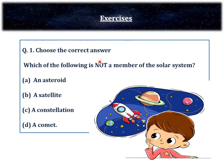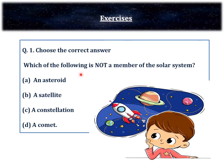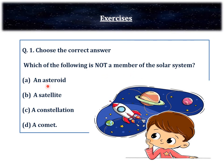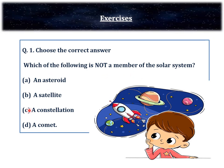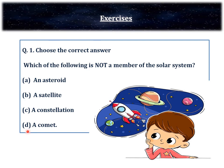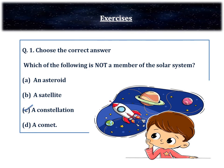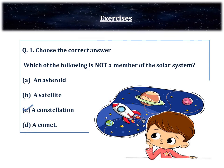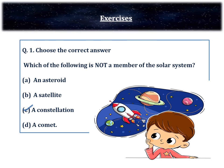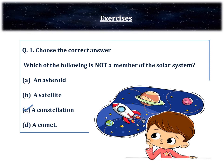Question number 1. Choose the correct answer. Which of the following is not a member of the solar system? A. An asteroid, B. A satellite, C. A constellation, D. A comet. The answer is a constellation. We know that asteroids, satellites, comets and planets, and the sun, they all form the solar system.